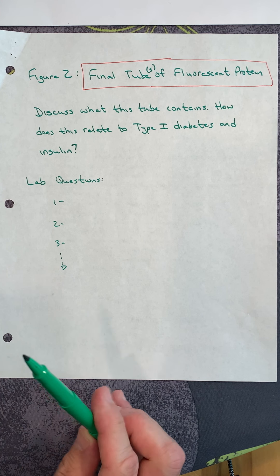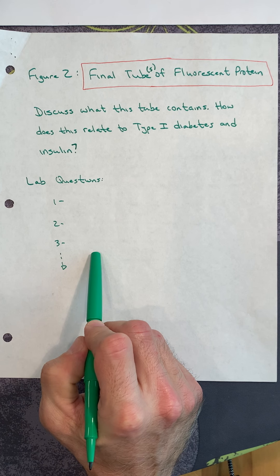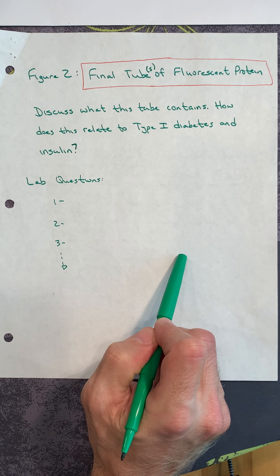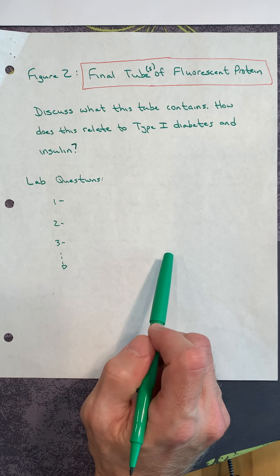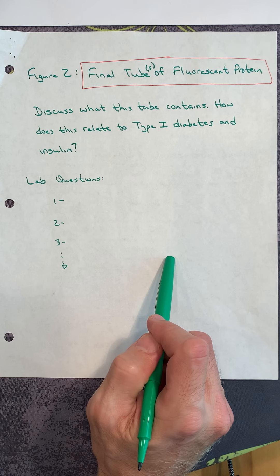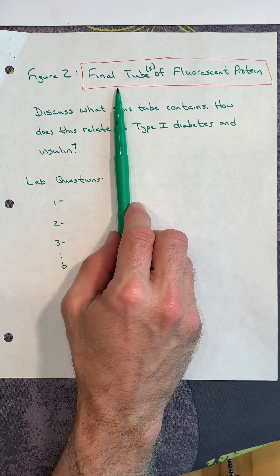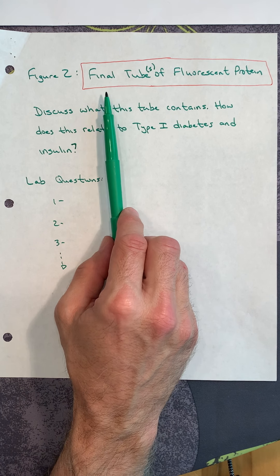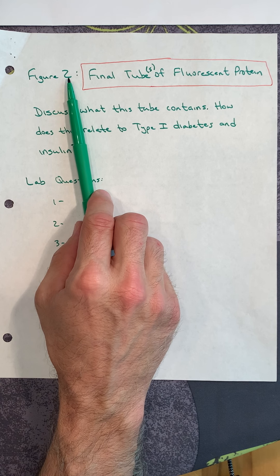Whatever picture you have of the final tube or tubes showing the fluorescent protein. Because again, what we're simulating is how pharmaceutical companies isolate the insulin out of GMO E. coli. Since we can't deal with human proteins and human DNA, we are using jellyfish genes that have been put into the E. coli. Whether you put the picture then the title, or the title then the picture, the order is up to you.